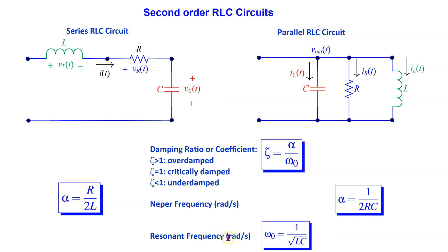The resonant frequency omega 0 exists in RLC circuits because the capacitor and inductor are both energy storage elements. Thus, it is possible for the energy to bounce around between the two energy storage elements. The neper frequency alpha is the rate of energy loss in an RLC circuit. The equation for alpha is different for series RLC circuits and parallel RLC circuits. However, the equations for zeta and omega 0 are the same.